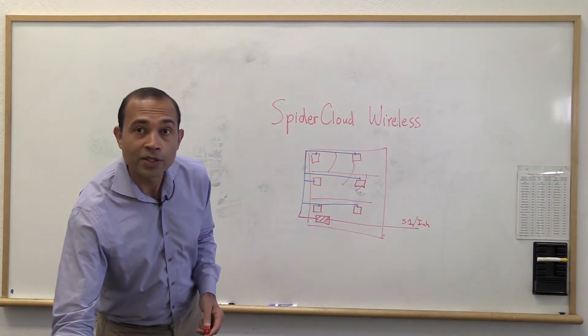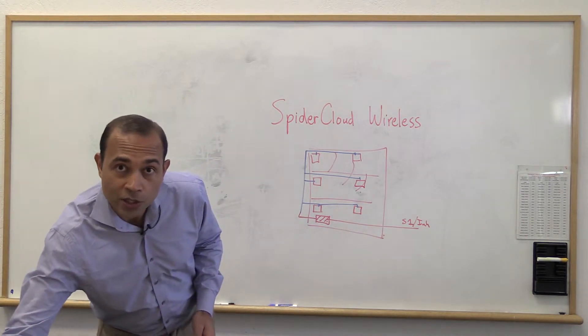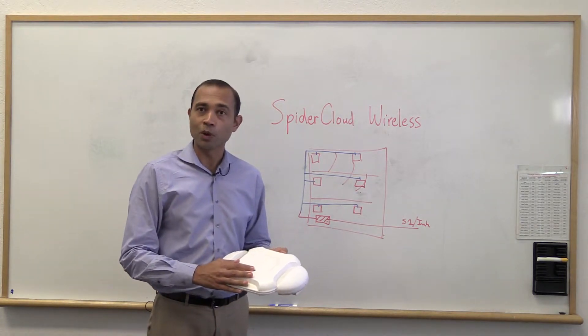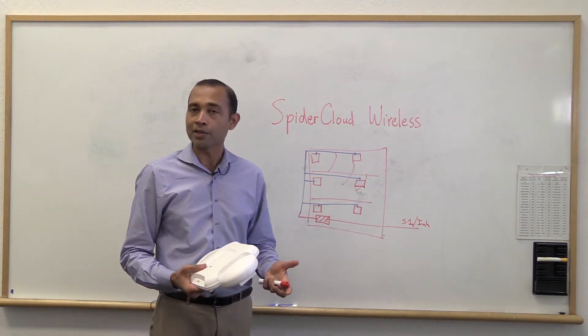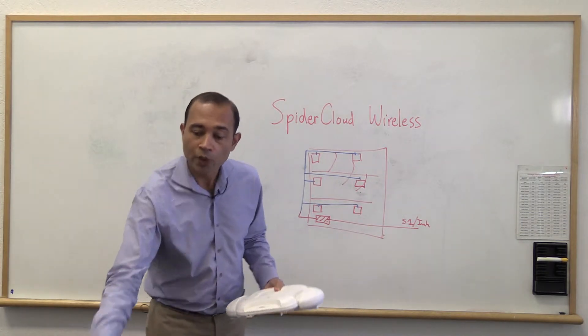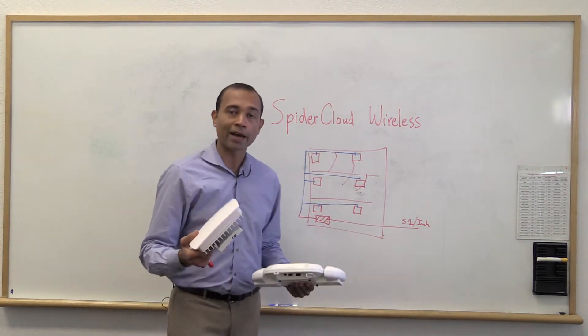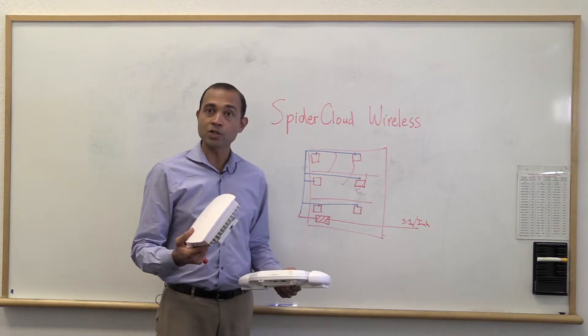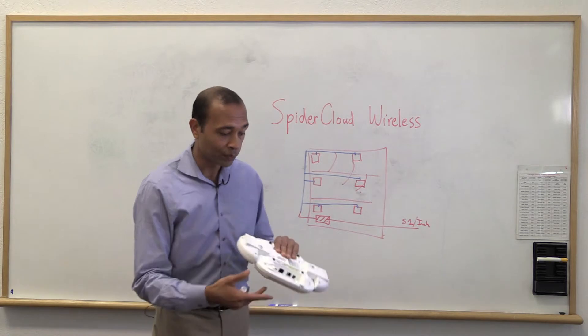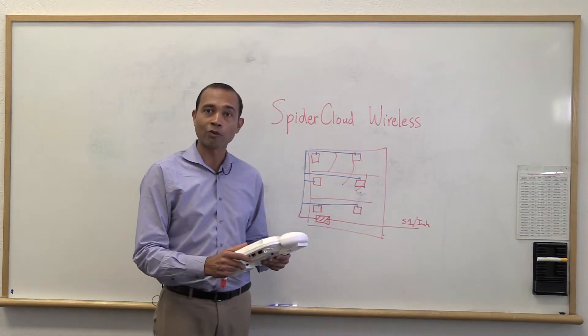Now what we are doing right now is we have started working with Cisco Systems. Cisco has a number of these Wi-Fi access points and millions of them are deployed in enterprises around the world. What we have done is built a module. So we have taken the technology that we used to have in our complete small cell access point and turned it into a module that can be plugged into a Wi-Fi access point from Cisco.